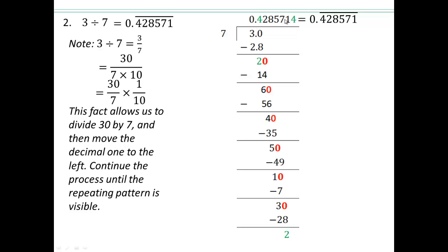That's a six-digit repeating block. So when you're dividing by 7, you're going to have anywhere between 0 and 6 digits repeating. If it's a terminating decimal, it will have no repeating digits. Just remember that — so if you get more than 6 digits, you know you made a mistake somewhere in the intermediate steps.